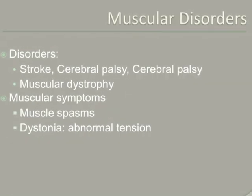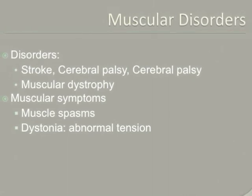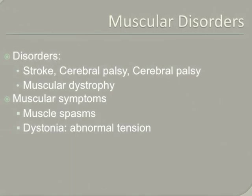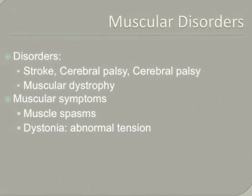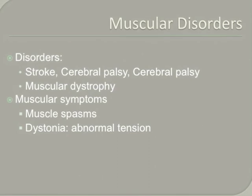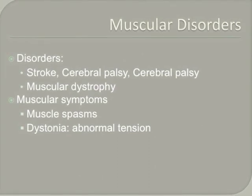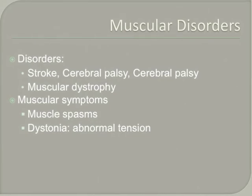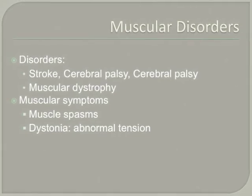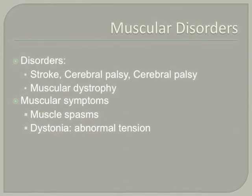Muscle disorders can originate in the brain, such as stroke, cerebral palsy, and multiple sclerosis, or they can originate in the muscle tissue like muscular dystrophy. Muscle spasms and dystonia, or abnormal tension of the muscles, can develop from muscle disorders. Psychotropic medications can also cause these kinds of symptoms as side effects, so we need to watch for these.